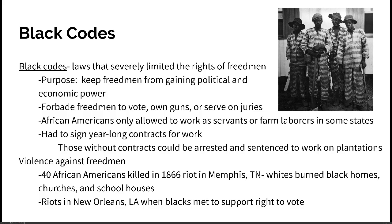African Americans were also required to sign year-long contracts for work. If you did not have a contract, you could be arrested and sentenced to work on plantations — slavery in all but name. There was also a lot of violence against freedmen. In Memphis, Tennessee in 1866, a riot saw whites kill about 40 African Americans, burning their homes, churches, and schoolhouses. We also saw riots break out in New Orleans when Blacks met to support the right to vote.